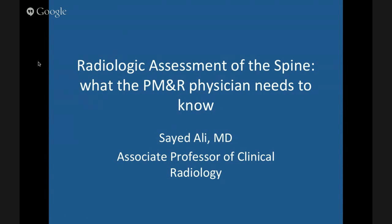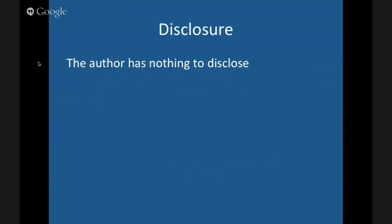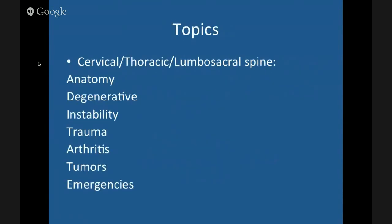Do you get a lot of experience looking at films? Good. So just ask questions along the way. I have nothing to disclose. So what we'll talk about is anatomy — mainly focus on degenerative changes in the spine, talk a little bit about instability and trauma imaging. Arthritis and tumors are more or less left out of this lecture, and some of the emergencies that you may see on spine imaging.